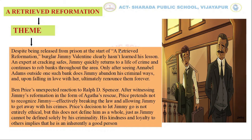Only after seeing Annabelle Adams outside one such bank does Jimmy abandon his criminal ways, and upon falling in love with her, ultimately denounce them forever. The second theme is justice. Ben Price's unexpected reaction to Ralph Spencer, after witnessing Jimmy's heroic act in the form of Agatha's rescue, is central to this theme.